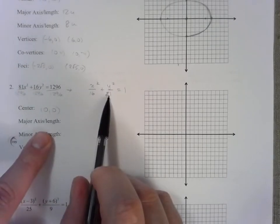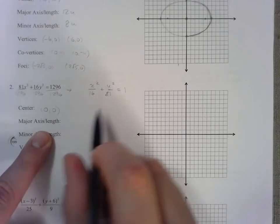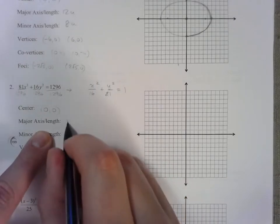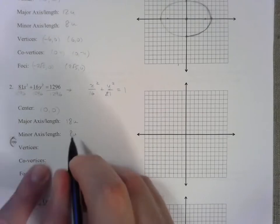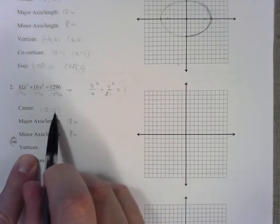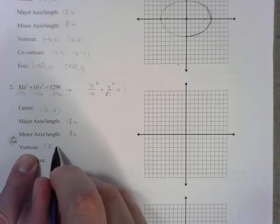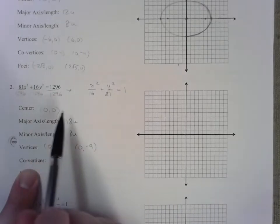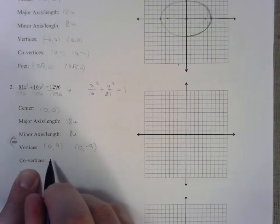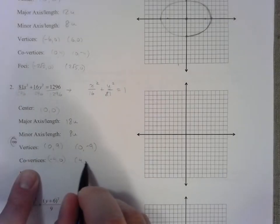9 units up and down, this is a tall ellipse. So 9 up, 9 down, that's 18 units in length. 4 left, 4 right, that's 8 units in length. The vertices would be 9 up and down from (0,0). 9 up, 9 down. Co-vertices would be 4 units left and 4 units right. (-4,0) and (4,0).